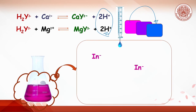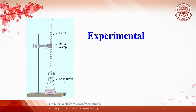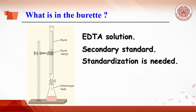Since hydrogen ions are formed during titration, a buffer solution is added to control the reaction at pH 10. Titration technique will be used in this lab — the reaction between calcium or magnesium ions in the Erlenmeyer flask and EDTA in the burette. Although there are three sections in this experiment, the burette contains EDTA in all sections.